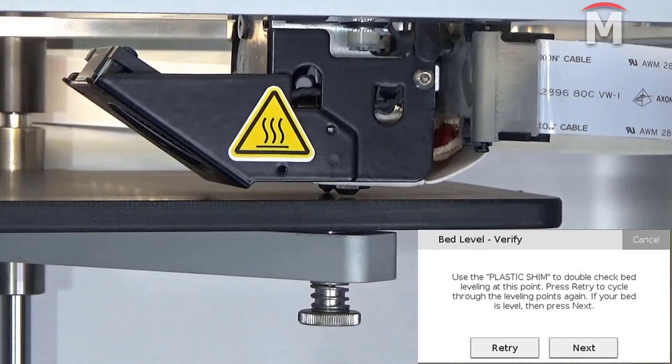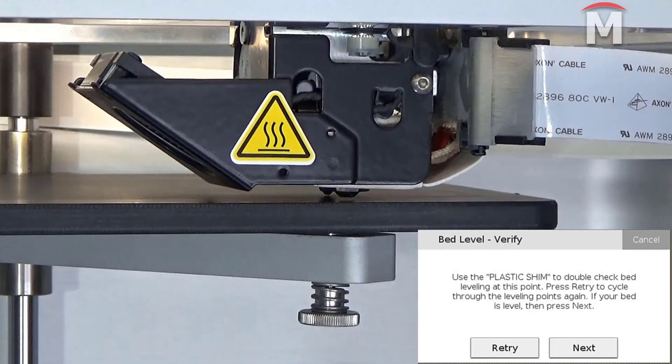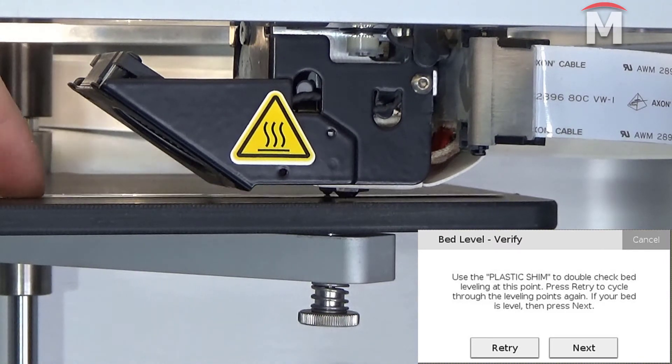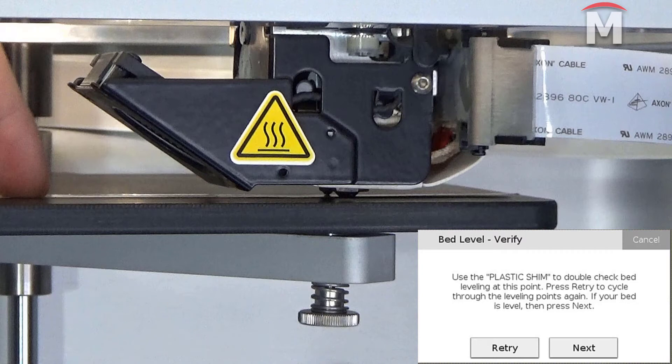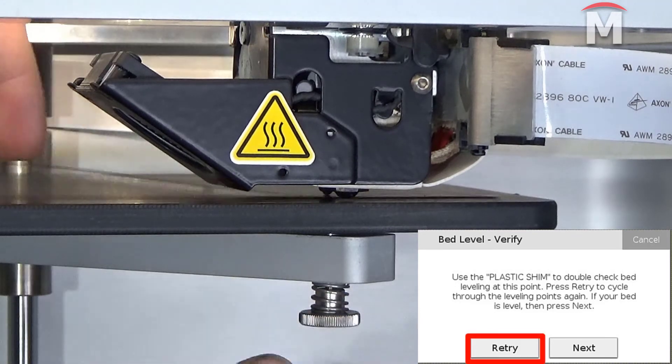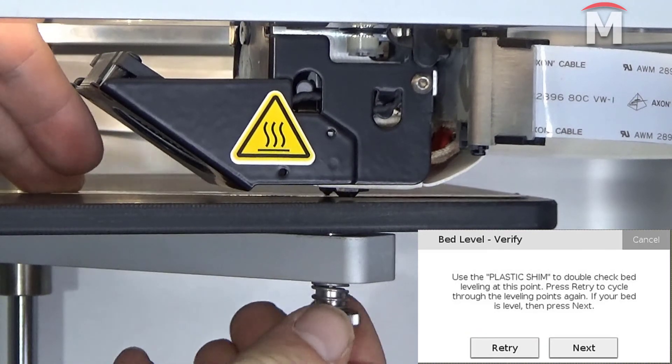After completing this process for the third thumb screw, when prompted by the utility, slide the plastic shim between the nozzle and the print bed to verify the tension over the first thumb screw has not changed. If you no longer feel a slight resistance on the shim, the print bed is not level. In that case, adjust the thumb screw until you feel a slight resistance on the shim, then press retry to adjust the other two thumb screws.